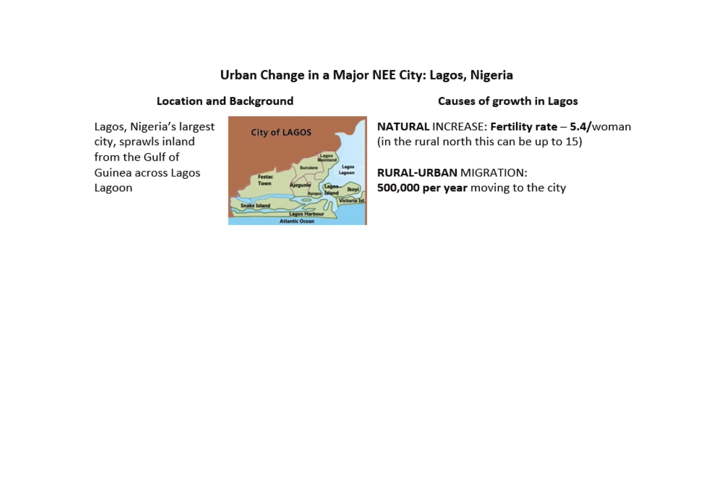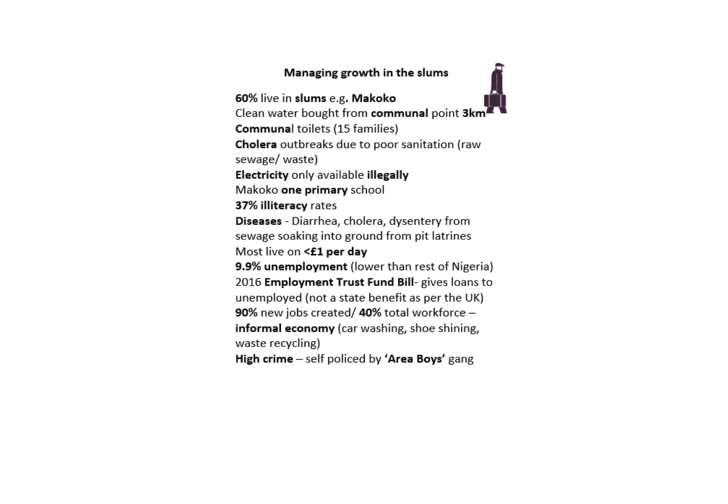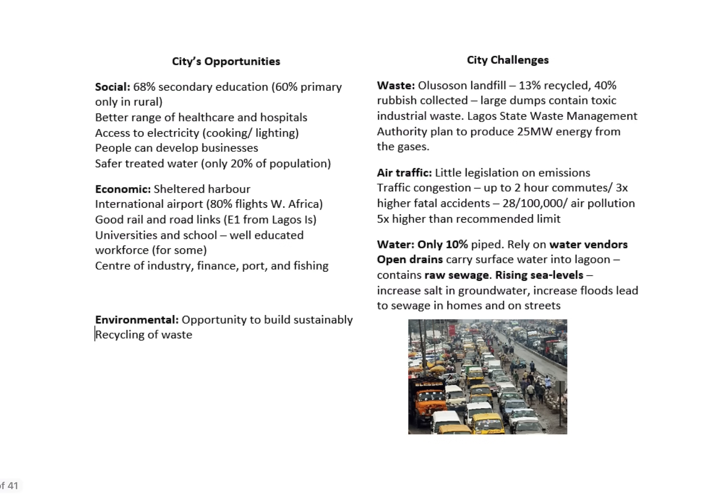Comparing this to a major change in an NEE city — your example is Lagos, Nigeria's largest city. It has large amounts of natural increase and huge rural-to-urban migration, with about half a million people moving in each year. Around 60% of people live in informal housing, such as Makoko — hence why Tempo housing was needed. Electricity is only available illegally, there's one primary school, 37% of the population are illiterate, and people are living on less than a pound a day. You might be asked to weigh up opportunity versus challenge for a 9-mark question.